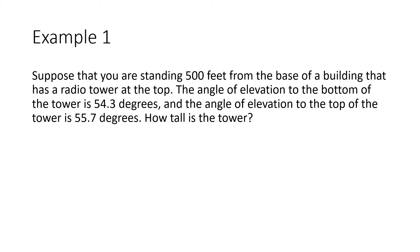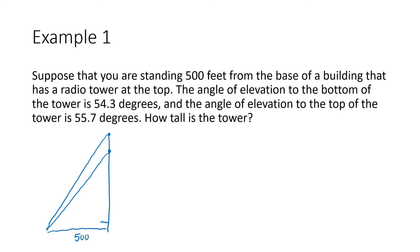The picture looks like this: here's the building, here's the bottom of the tower which is the top of the building, and here's the top of the tower. We've got two different angles as we look up to that tower, 500 feet away from the bottom of the building. There's a right angle at the bottom since buildings are vertical. There are really two heights: the height of the tower, which I'll call T, and the height of the building, which I'll call B.